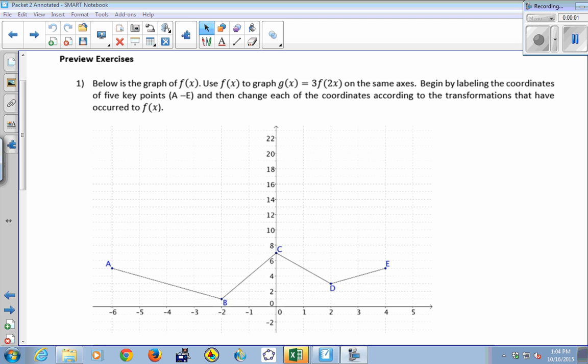So here's a graph of f of x. It's the entire graph. I want to use this picture to graph a function g that's 3 times f of 2x by labeling the coordinates of the five key points, a through e, and then we're going to change each of the coordinates according to the transformations that have occurred. So that 3 tells you to do something and that 2 tells you to do something to transform the function.